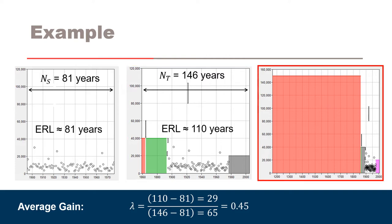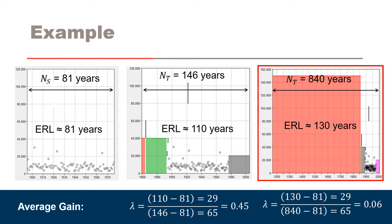In the third figure on the far right, we have added a paleo flood non-exceedance bound to the total record using a perception threshold. This increases our total record length to 840 years. The effective record length of this data set is now about 130 years, resulting in an average gain of about 0.06. The average gain is relatively small because the increase in effective record length is relatively small compared to the large increase in total record length from the paleo flood non-exceedance bound. Despite this being a relatively small average gain, the gain in effective record length is still significant — on the order of 20%.